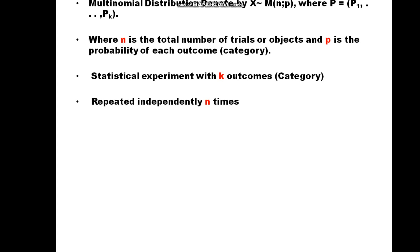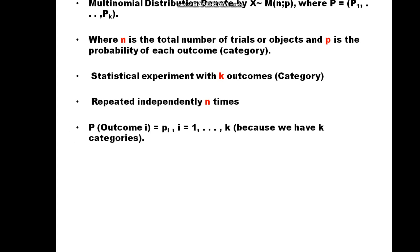For outcome i, PI is the probability of category i, where i equals 1, 2, 3 to K. That means if we say PI, it means the probability of category i: P1 is category 1, P2 is category 2, and PK is category K. Then here we have K categories.